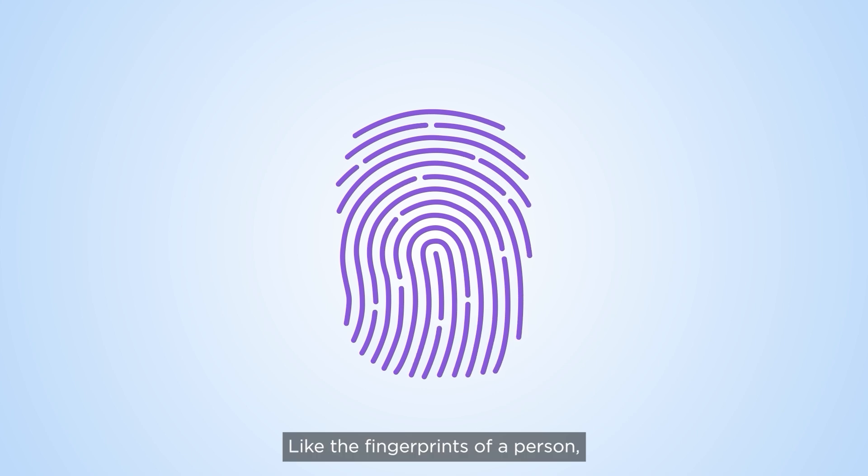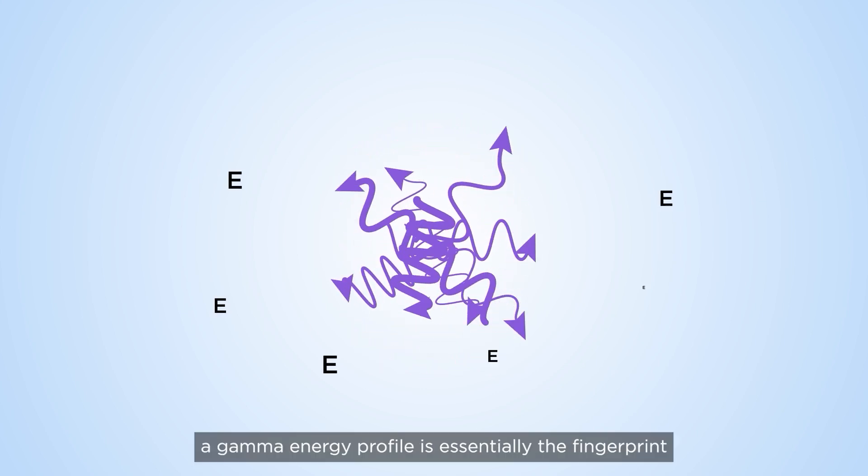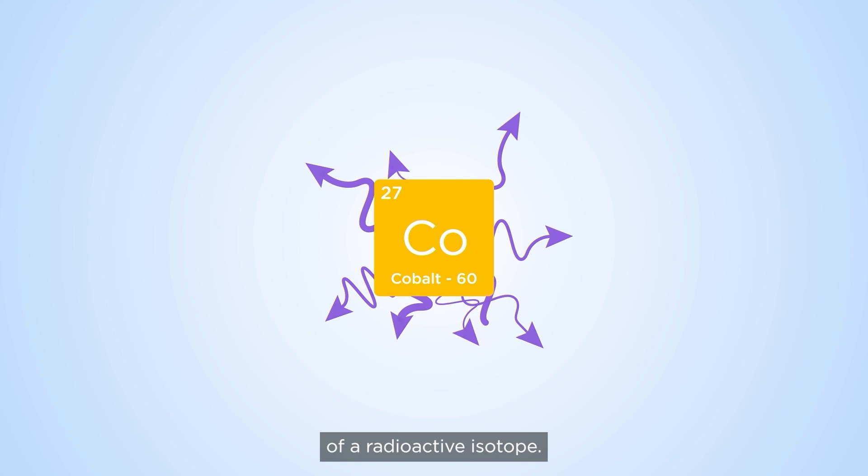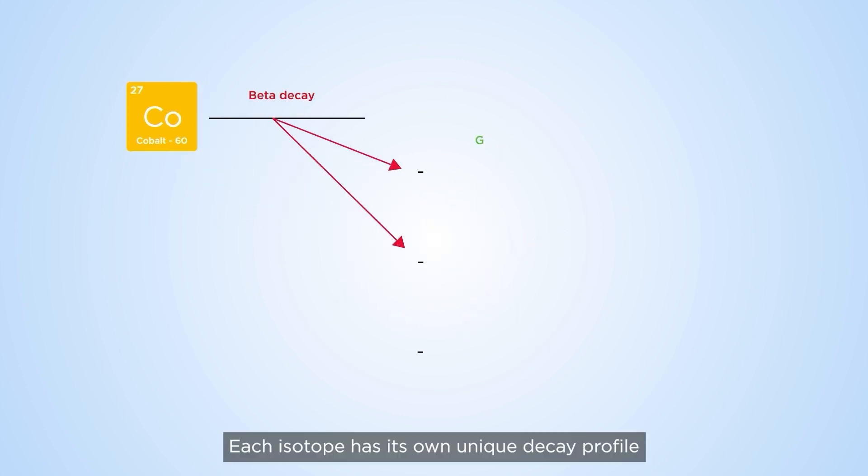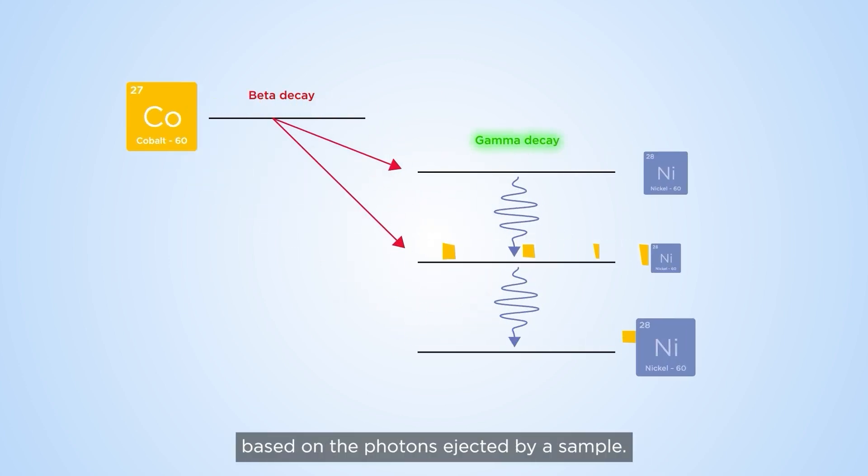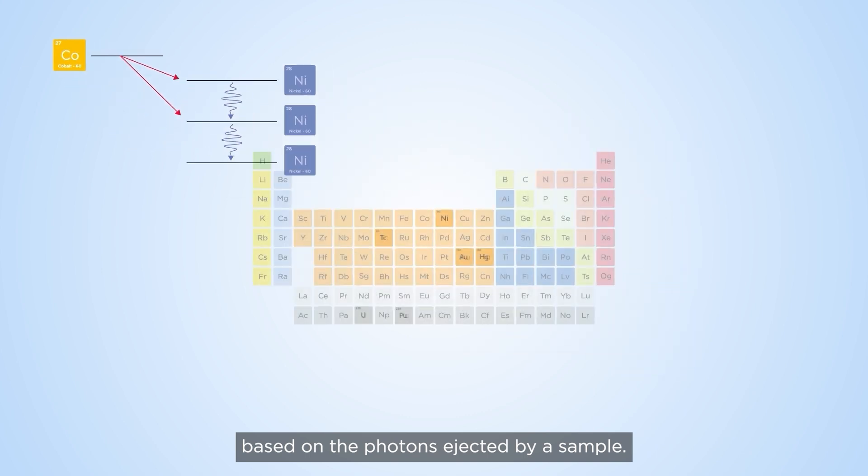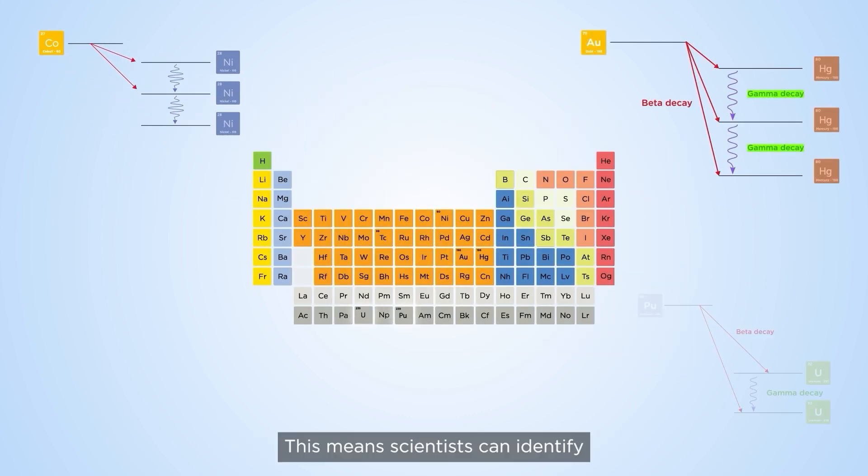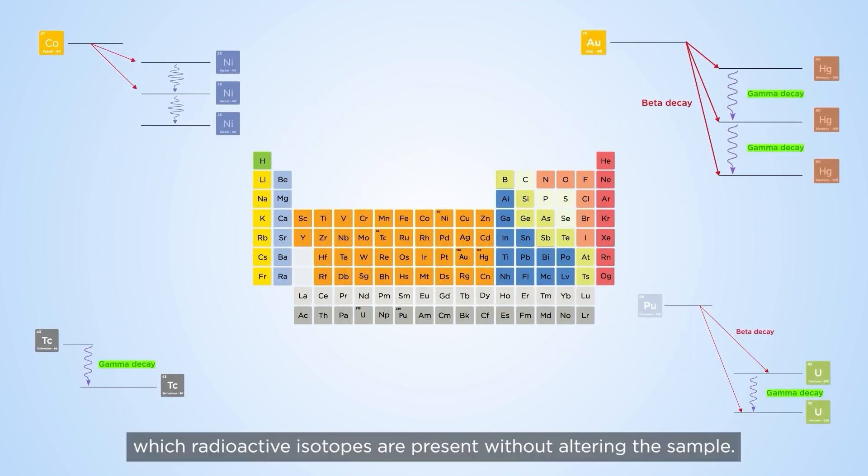Like the fingerprints of a person, a gamma energy profile is essentially the fingerprint of a radioactive isotope. Each isotope has its own unique decay profile based on the photons ejected by a sample. This means scientists can identify which radioactive isotopes are present without altering the sample.